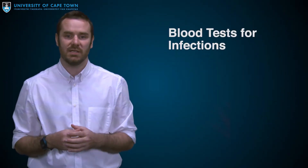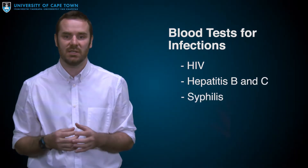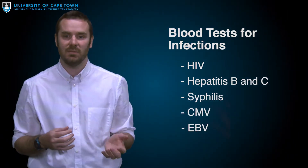All donors are screened with blood tests such as HIV, hepatitis, syphilis, CMV (cytomegalovirus), and EBV (Epstein-Barr virus). These tests are very sensitive but can potentially miss an infection which is in the window period — the time when a patient has just picked up an infection and tests are unable to detect it. Depending on the sensitivity of the testing, this window period can be from a few hours to a few days. We use the most sensitive screening tests available to minimize the infectious risks associated with transplantation.